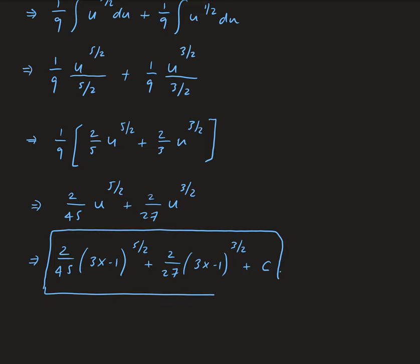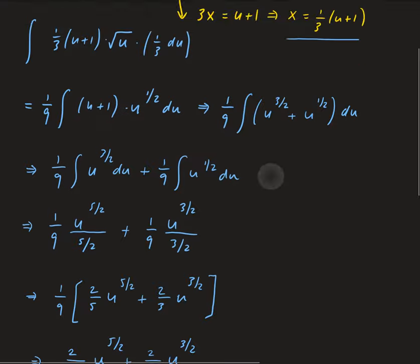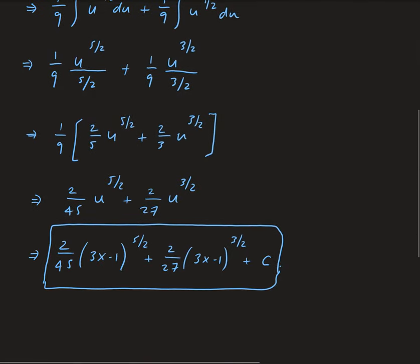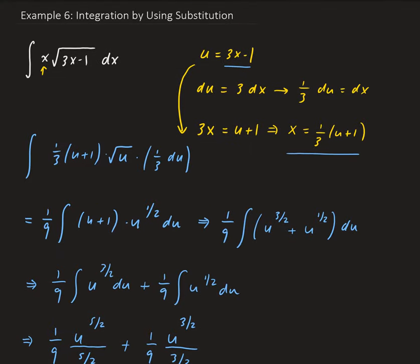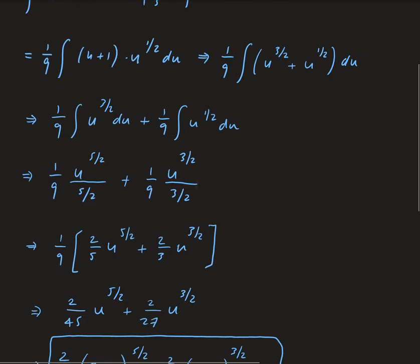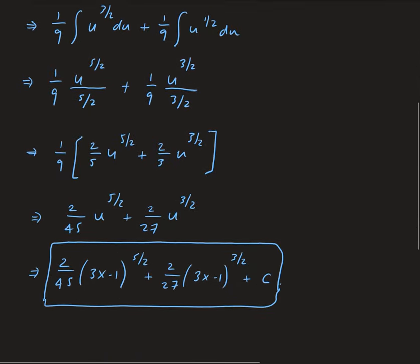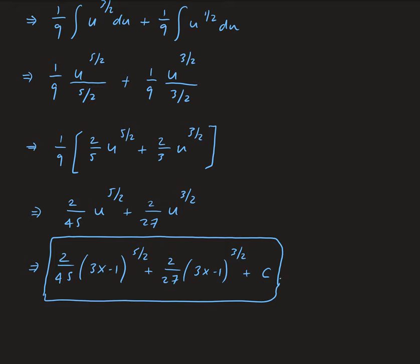So this is our anti-derivative of the function we were given. We did this by letting u be the expression underneath the square root, which allowed us to solve for x in terms of u. Taking the derivative of u with respect to x gave us the replacement for dx, giving an expression entirely in u. We applied the power rule for integration and then converted everything back into terms of x.